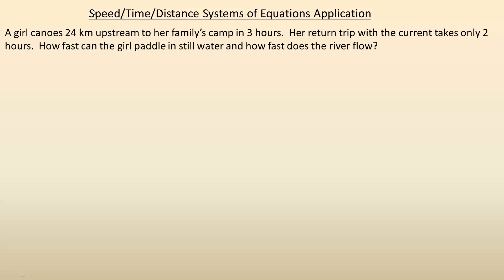In this tutorial we are going to look at a speed, time, distance system of equations application. In this question, a girl canoes 24 kilometers upstream to her family's camp in 3 hours, and the return trip with the current takes only 2 hours. How fast can the girl paddle in still water and how fast does the river flow?